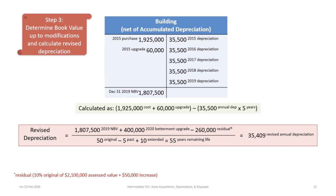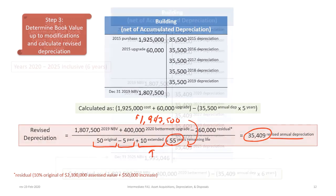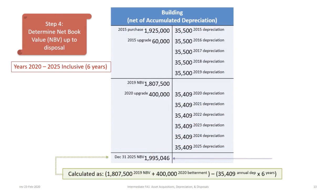We also need to look at any revisions to the useful life of the asset. The original life was 50 years; five years of depreciation have passed. The betterment extends the life by an additional 10 years. So 50 minus 5 plus 10 gives 55 years of remaining life. Taking $1,947,500 divided by 55 years gives a revised annual depreciation of $35,409.